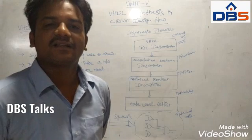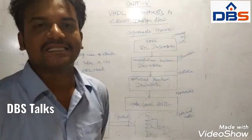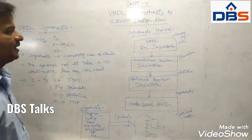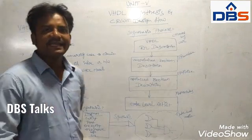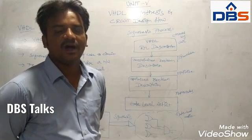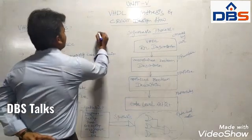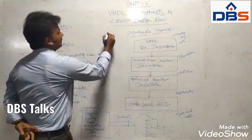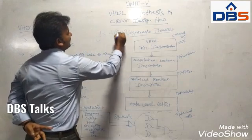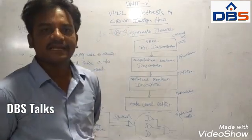So up to now, we have seen different logic functionalities. That logic functionality may consist of Boolean expressions. The Boolean expression can represent any type of logic, either a combinational circuit or sequential circuit. For example, the Boolean expression Y is equal to A into B plus C whole part. This is an unoptimized Boolean expression.